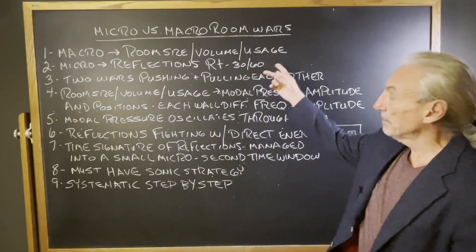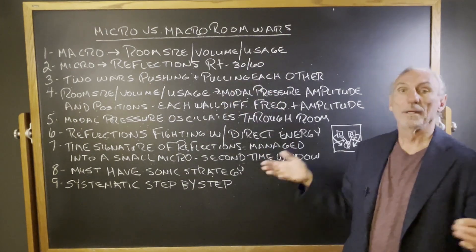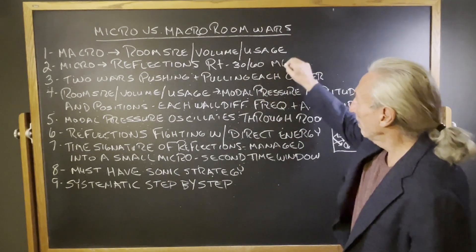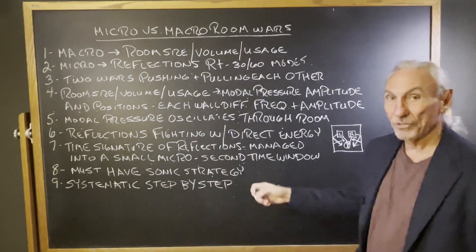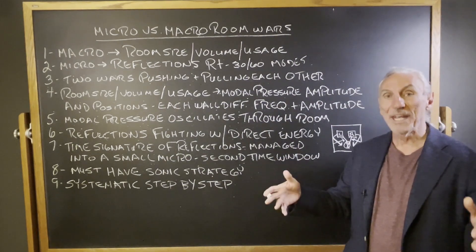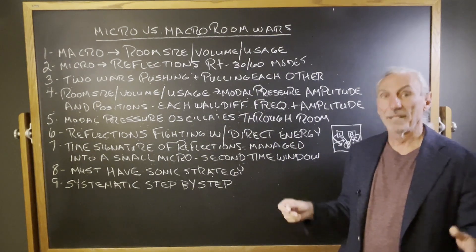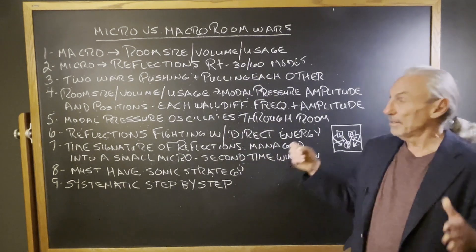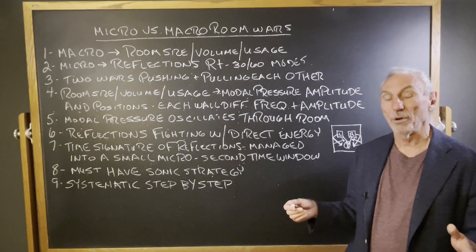Macro: room size, volume, and usage. The micros: the reflections and the modes inside. We've got all kinds of pressure and reflections going on inside the room. The room is our container, and it has to be the right size to match the usage. And then inside the room, we have issues that have to be resolved also.